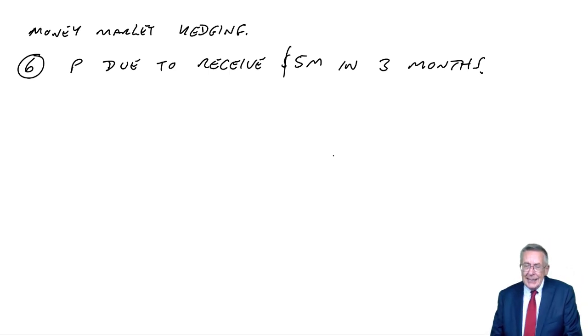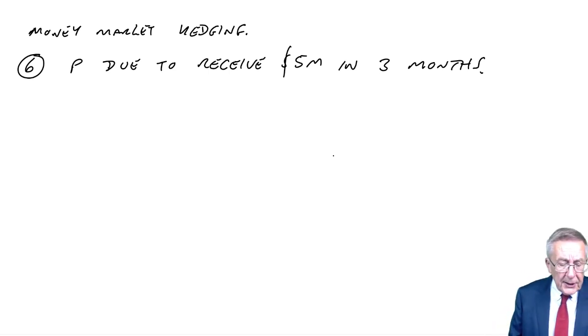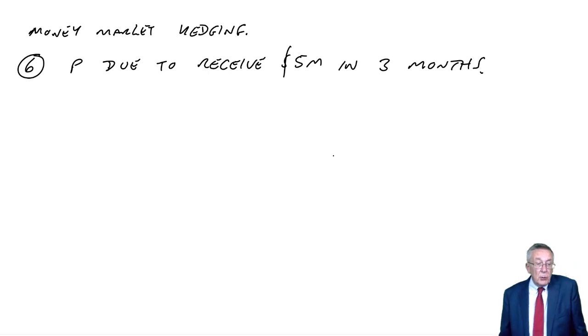And so the only way that I could not be at risk due to movements is if I was to convert now, because obviously if I convert now, we know what today's spot rate is. There's no worry about future movements. But how can I convert now when we're not going to get the money for three months? How can I convert now if I've got dollars now and I'm not getting the dollars for three months? And so the way we do it is this.